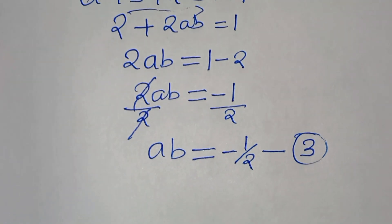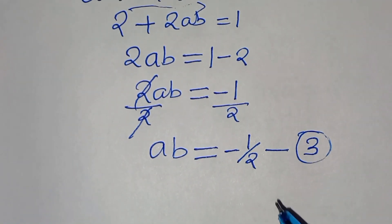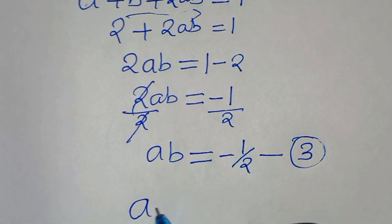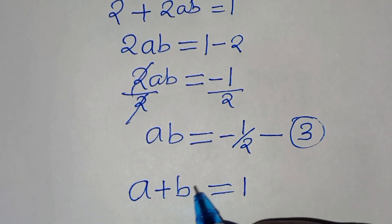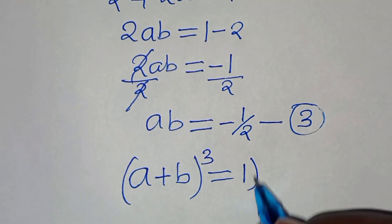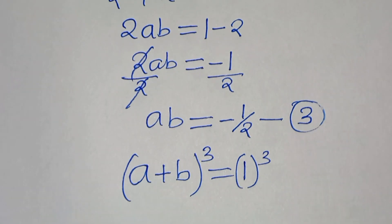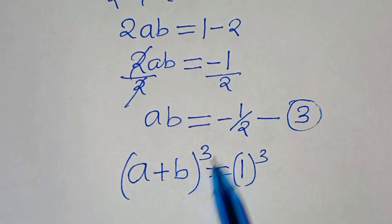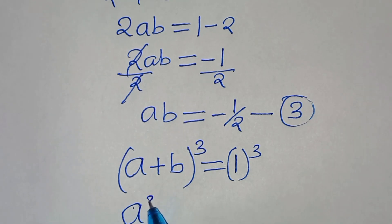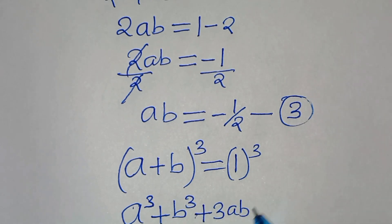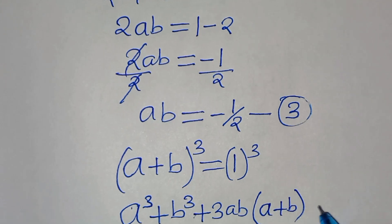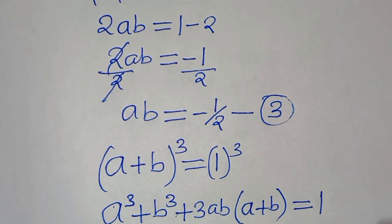The next step: from equation one, which is a plus b equal to one, let's raise to the power of three on both sides. So a plus b to the power of three is the same as a cubed plus b cubed plus three times ab times the quantity a plus b, which equals one to the power of three, which is one.